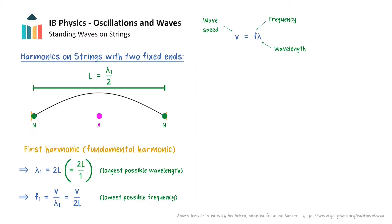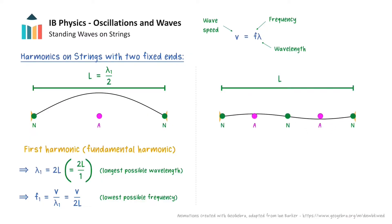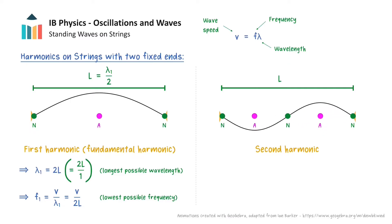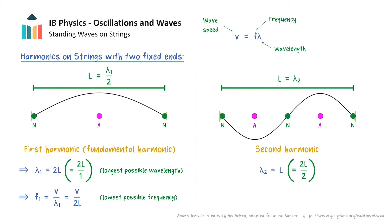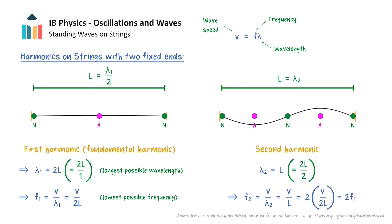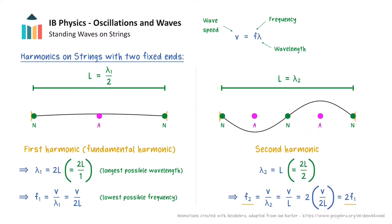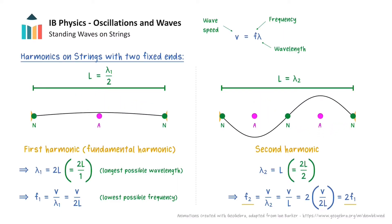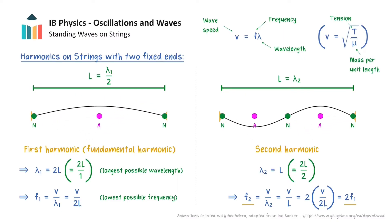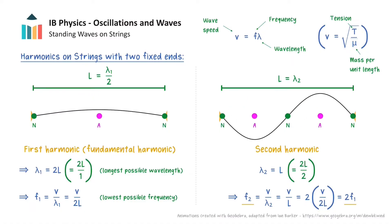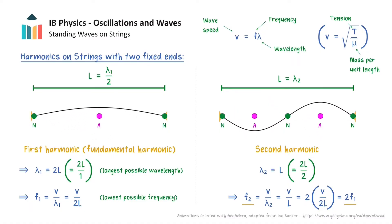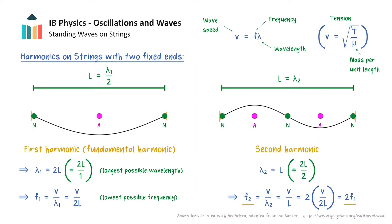The next longest wavelength of standing wave that matches the boundary conditions of two fixed ends has three nodes and two antinodes, and this is known as the second harmonic. Here, exactly one wavelength fits on the string, and when we calculate the corresponding frequency denoted with a subscript 2, notice how this is double the frequency of the first harmonic. As a side note, the waves on the string will travel at a fixed speed v which is dependent on the tension of the string and the mass per unit length of the string. Therefore, these harmonic frequencies of oscillation are dependent on the physical properties of the string.